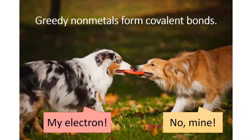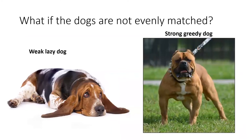Recall from section 8.3 that atoms are held together by a covalent bond in the same way that two dogs are held together by a toy that they both want. This section will imagine what happens when the two dogs are not evenly matched, and one dog is capable of holding onto the toy with much greater strength than the other.